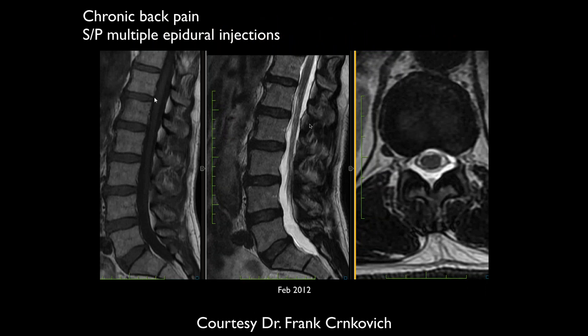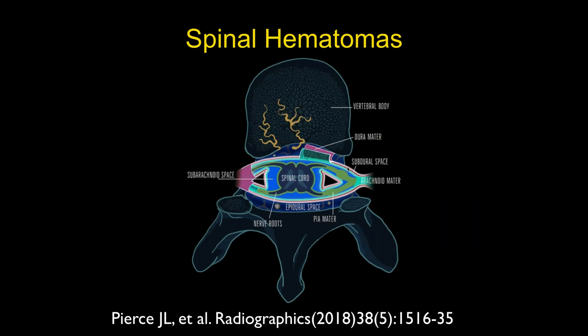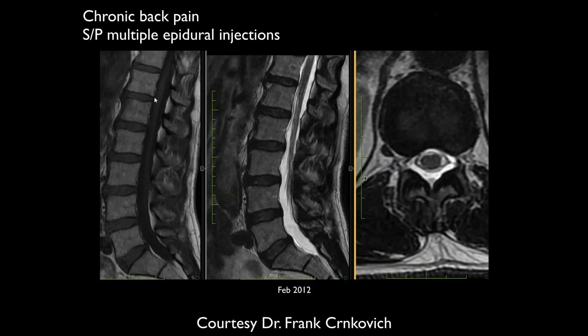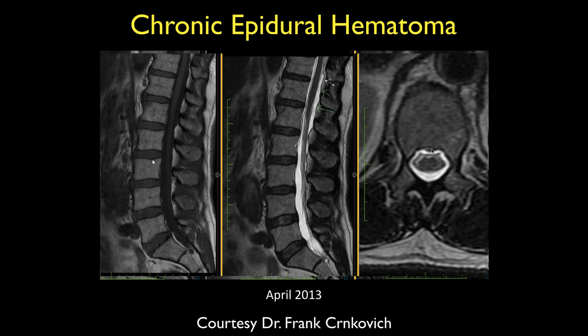On the sagittals it just looks like normal CSF — you wouldn't call it abnormal. But on the axials it is abnormal: there's something epidural here. The dura is normally not visible, but the epidural collection has pushed it away from the bone, allowing us to see the dura and the subdural space. All this anatomy is now visualized because the epidural collection has pushed it away from the bone. You can see the entire thecal sac is surrounded by this fluid.